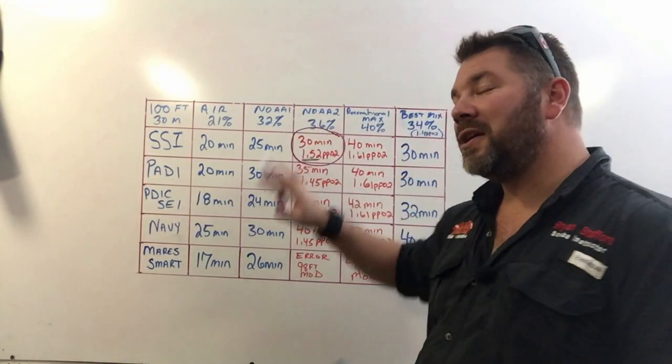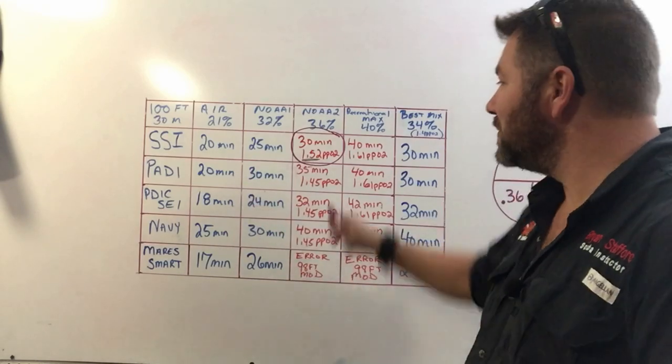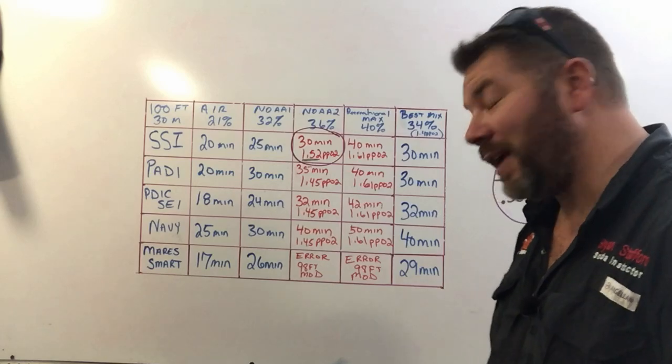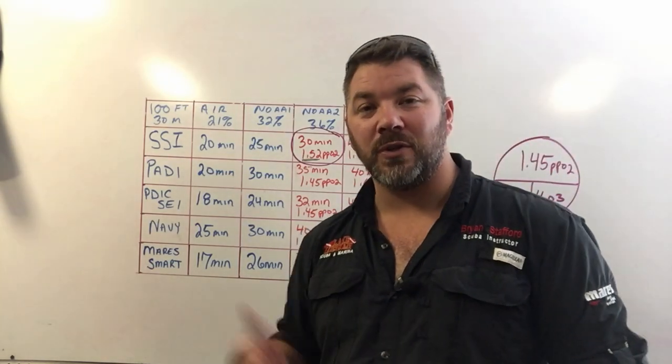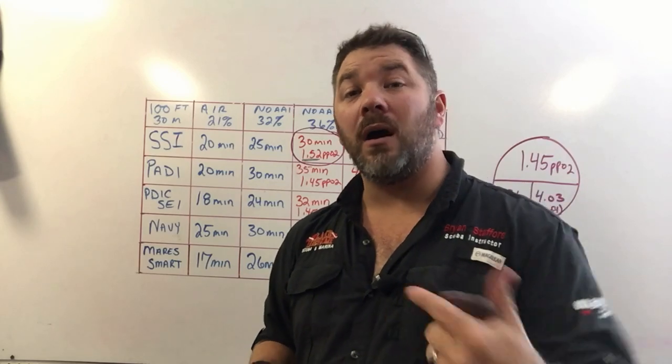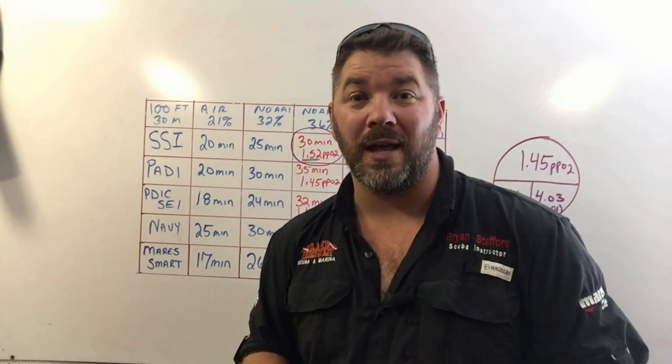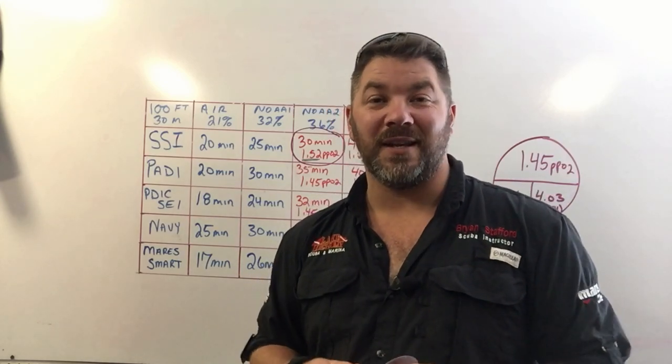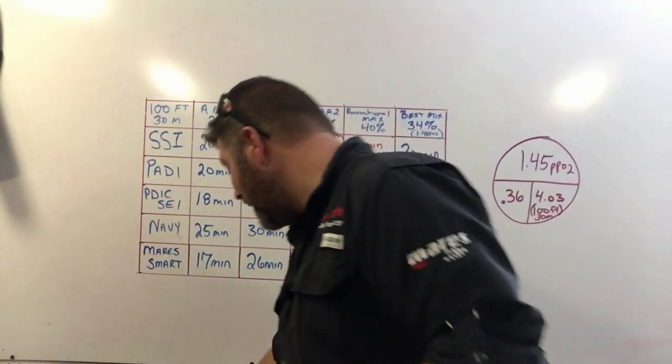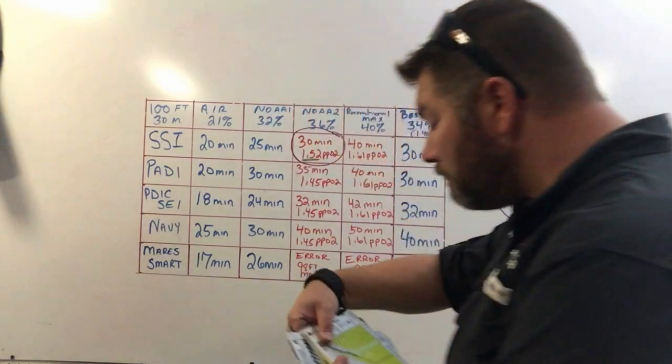But let's take a look at several sets of tables and see why this one comes up a little bit different. I think it's going to shock you in the end when you see the reason behind it. It's a very simple reason and it goes all the way back to your open water class on how to read a set of dive tables.